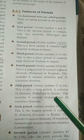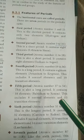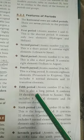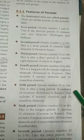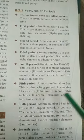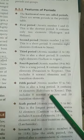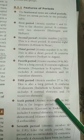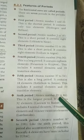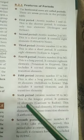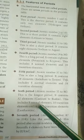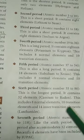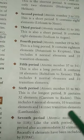Transition elements are the D block elements, positioned between the S block and P block. The fifth period covers atomic numbers 37 to 54. It is also a long period containing 18 elements, starting from rubidium and ending at xenon. It includes 8 normal elements and 10 transition elements. The sixth period covers atomic numbers 55 to 86. This is the longest period, containing 32 elements, starting from caesium to radon. It includes 8 normal elements, 10 transition elements, and 14 inner transition elements — that is, the lanthanides.